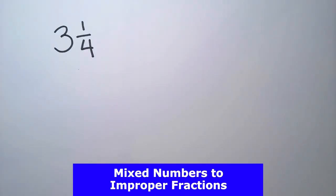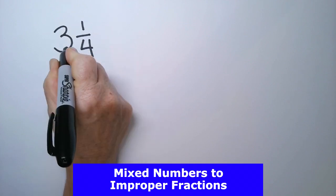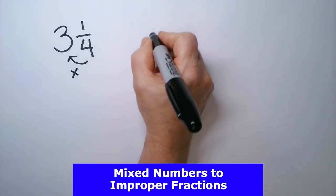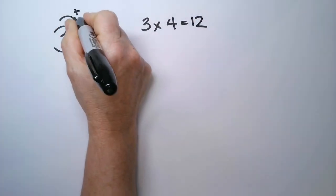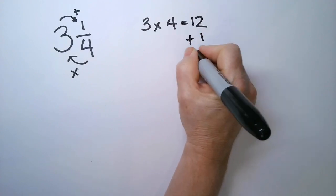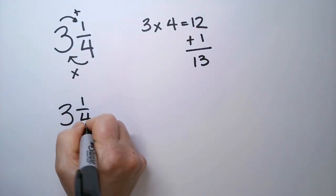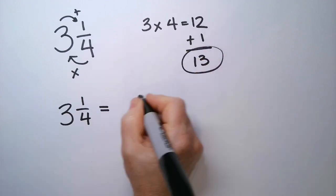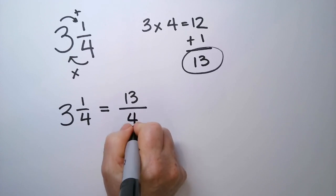To go from a mixed number into a fraction, what we do is we multiply the denominator by the whole number. So, 3 times 4 is 12, and then we add that numerator. The answer is 3¼ is the same as 13 over, and we keep the denominator the same, 13 fourths.